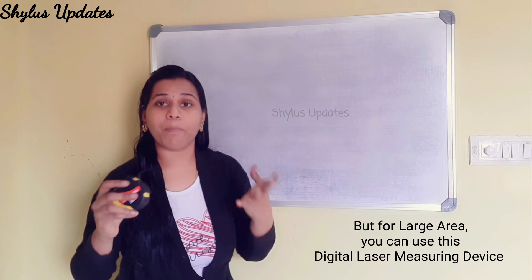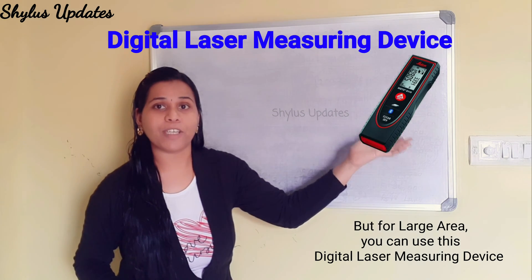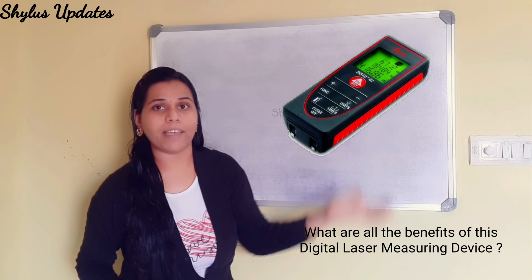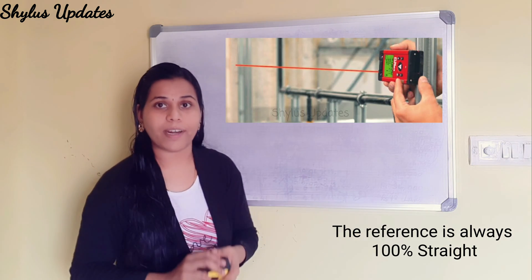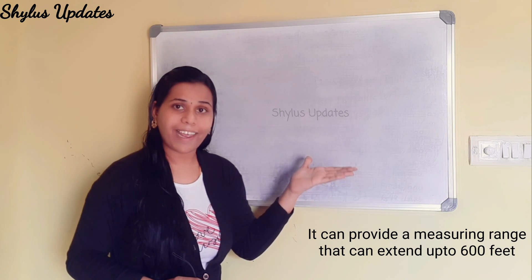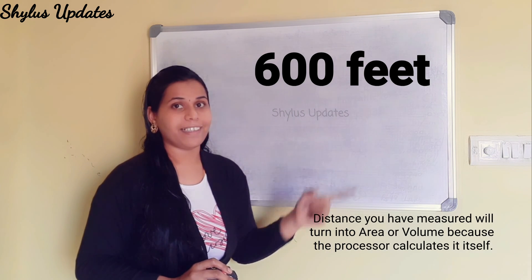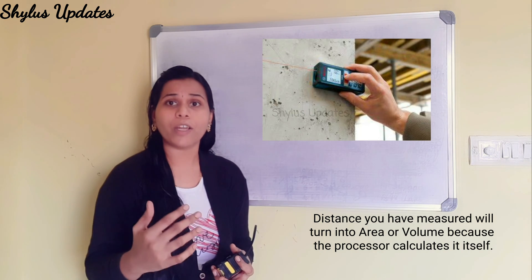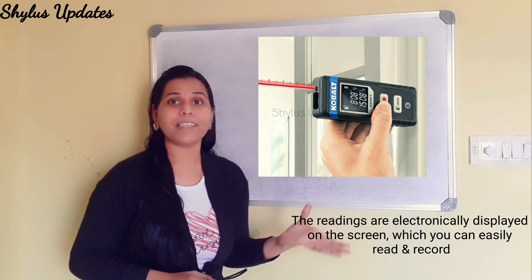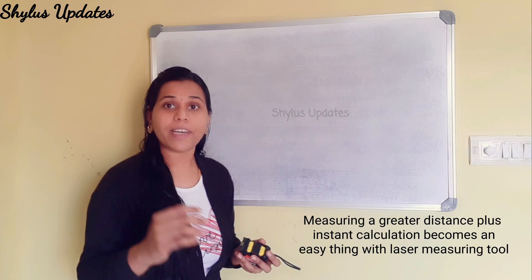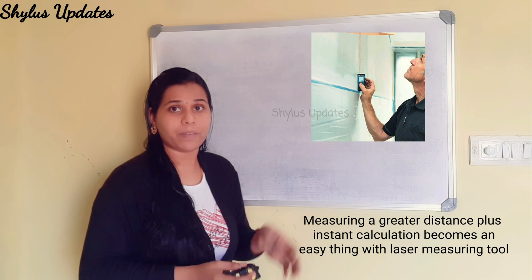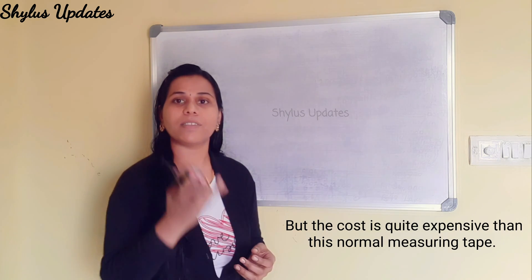But for a large area, to measure a whole house, you can use this digital laser measuring device. It has a lot of benefits over the measuring tape. The reference is always 100% straight, and they are often very light and easy to use. This laser device can be extremely accurate and can provide a measuring range that extends up to 600 feet. The distance you measure will be converted into area or volume because the processor calculates it automatically. The readings are electronically displayed on the screen, which you can easily read and record. Measuring a greater distance plus instant calculation becomes easy with this digital laser measuring tool.